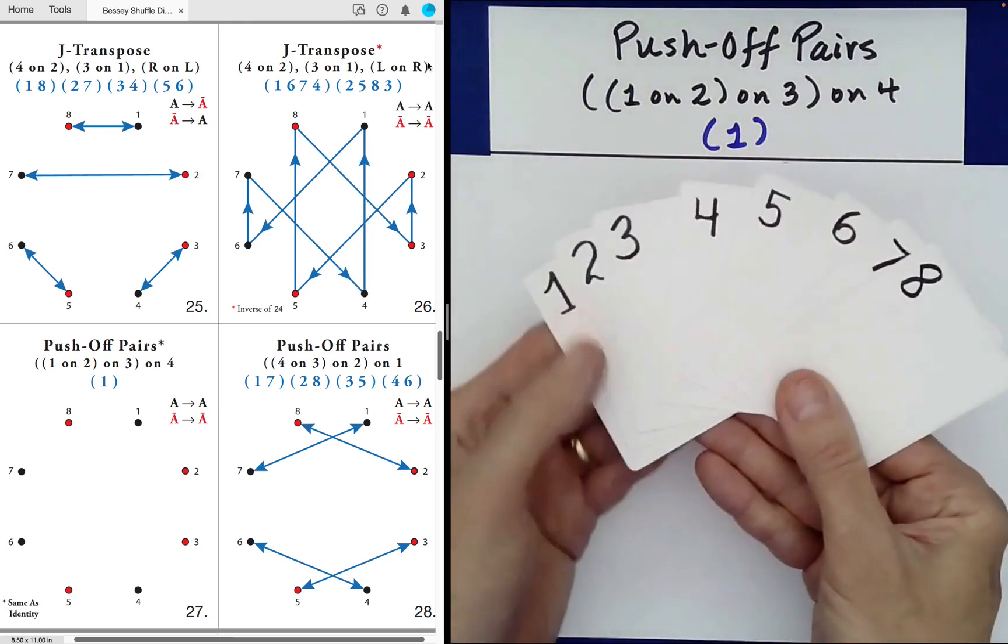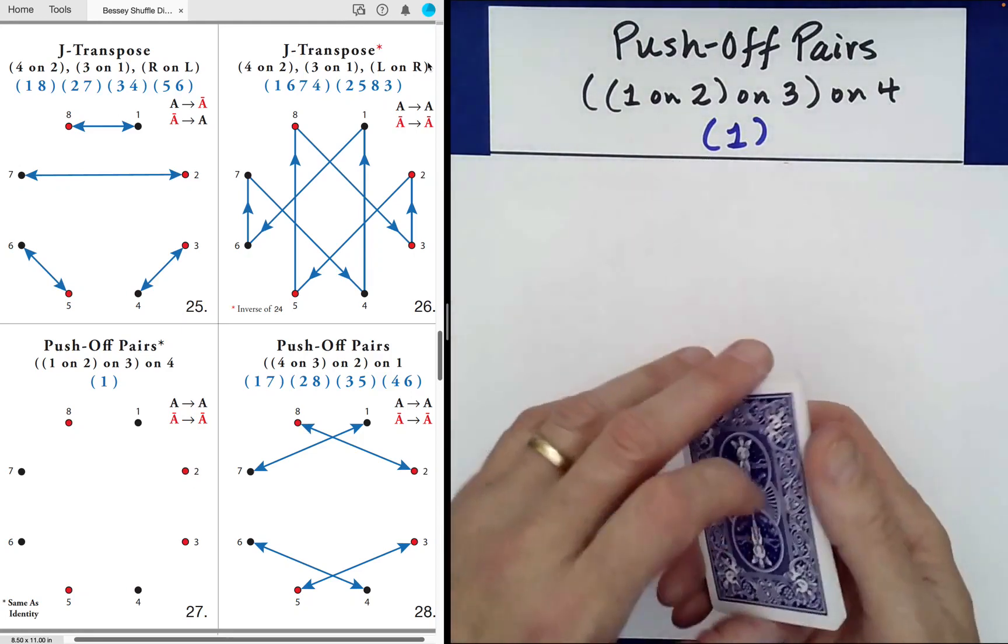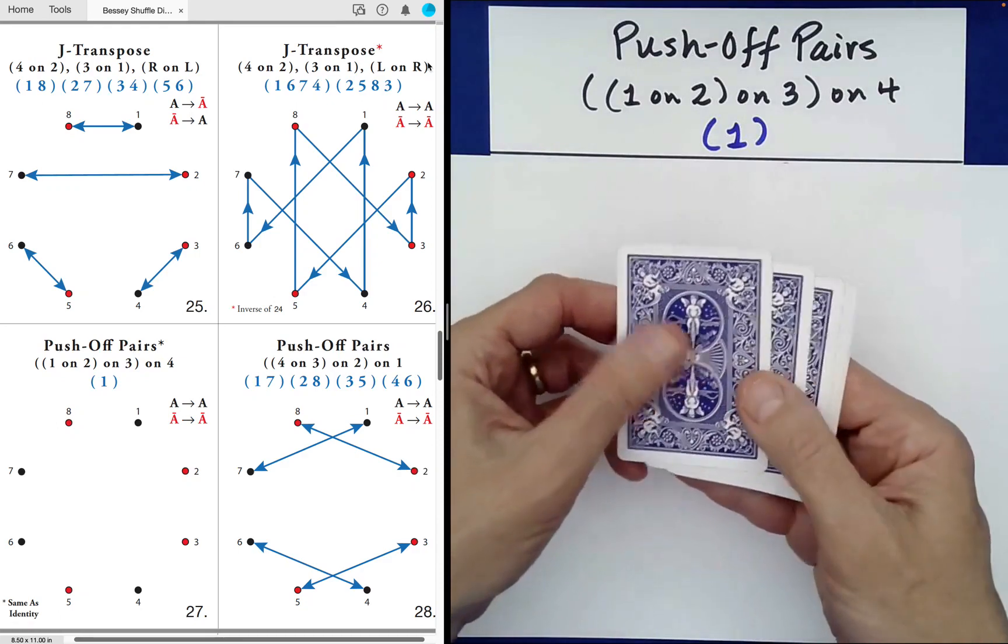Okay, so here we have our order packet, one through eight. So push off pairs. What does that mean? It just means you push off pairs.